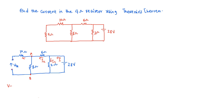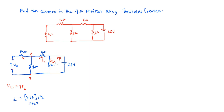So VTH will be equal to 8 multiplied by I2. Our main goal here is to find I2. To find I2, you will see that the 8 ohms and the 6 ohms are in series, and they will all be in parallel with the 2 ohms. So we calculate the total resistance: 8 plus 6 in parallel with 2 ohms gives us (14 × 2) divided by (14 + 2), which gives us a value of 1.75 ohms.